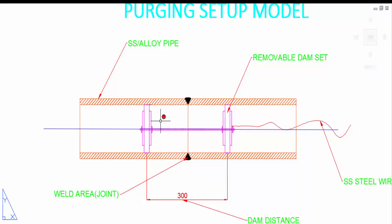After that, we have to remove the dam. So how to calculate how many liters we will give for purging and how many times we have to give the purging?